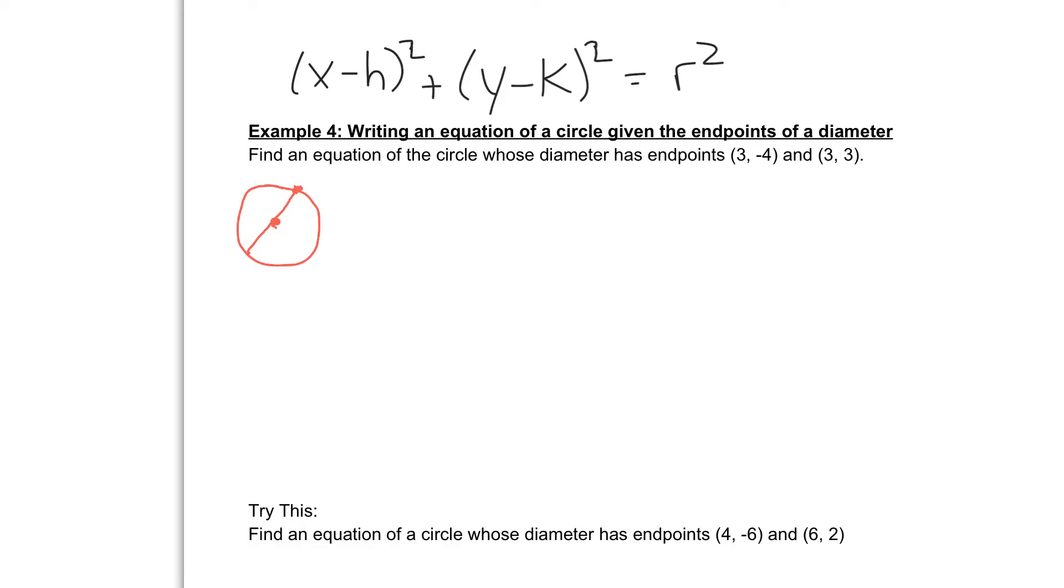These points here on the end are called my endpoints of my diameter. So there's one endpoint of the diameter, there's another endpoint of the diameter. These two points, which I'll make them yellow, so those yellow points are the endpoints of the diameter. And remember there's a lot of different diameters that you could have. This one has these specific endpoints of 3, -4 and 3, 3.